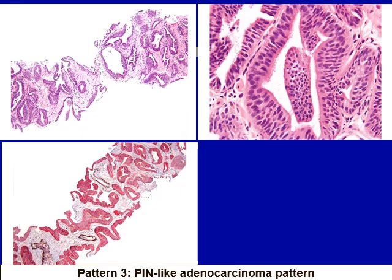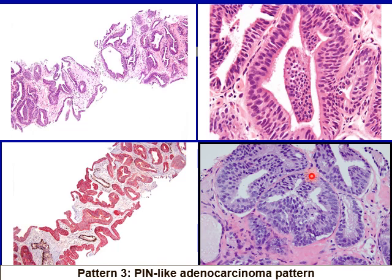PIN-like prostate adenocarcinoma is a morphologic variation that can mimic high-grade prostatic intraepithelial neoplasia. Here is a nice example showing large, crowded glands with stratified nuclei in a flat and occasionally tufted pattern. It is very important that these glands should not have cribriform or papillary morphology to qualify for the diagnosis of PIN-like adenocarcinoma. PIN-like adenocarcinoma can have two forms based on nuclear features: ductal, in which nuclei are elongated and columnar-like, or acinar, in which nuclei are more rounded. Both PIN-like ductal and acinar forms are given Gleason pattern three.